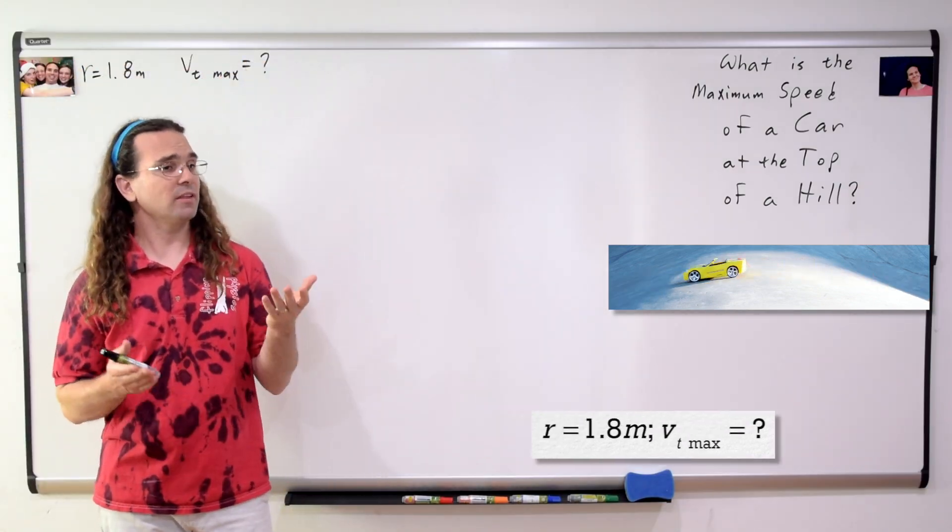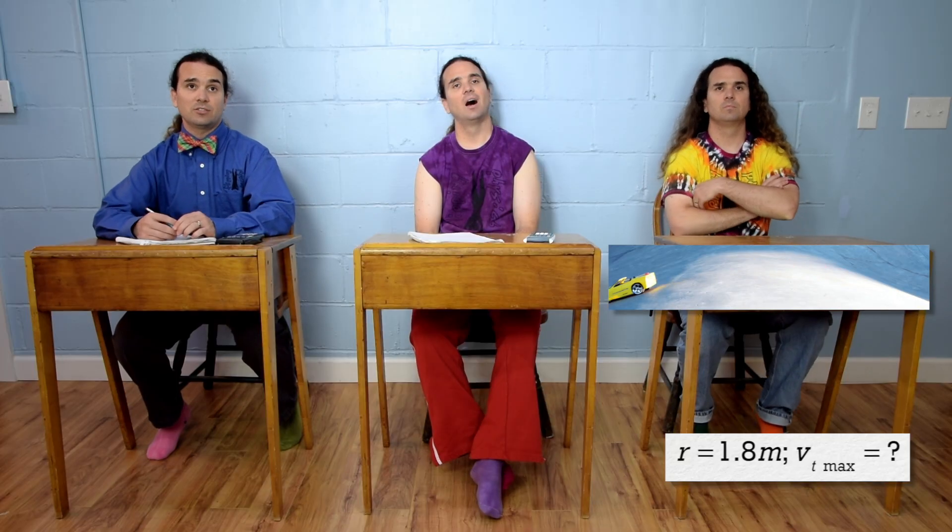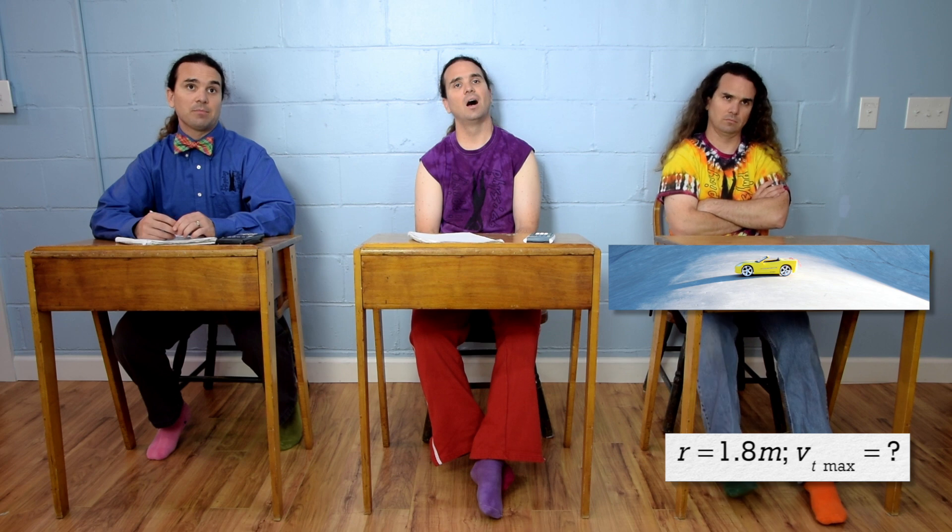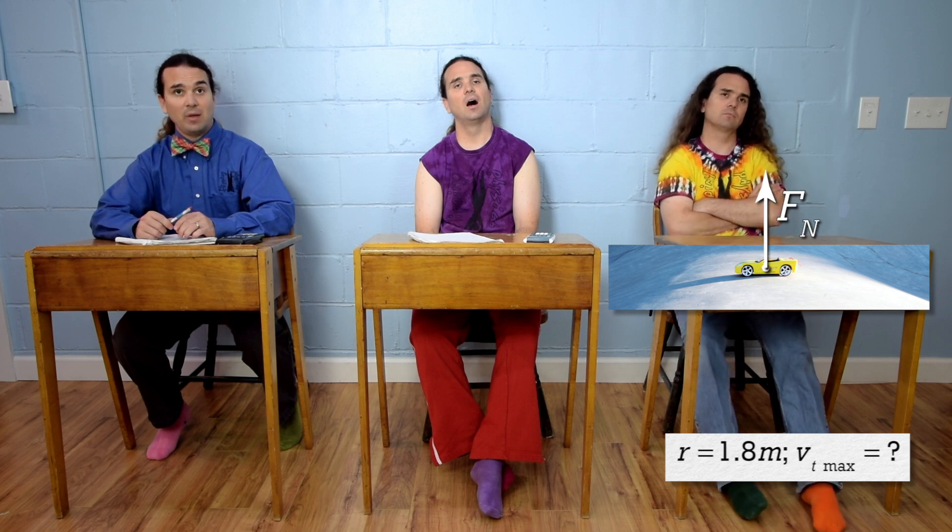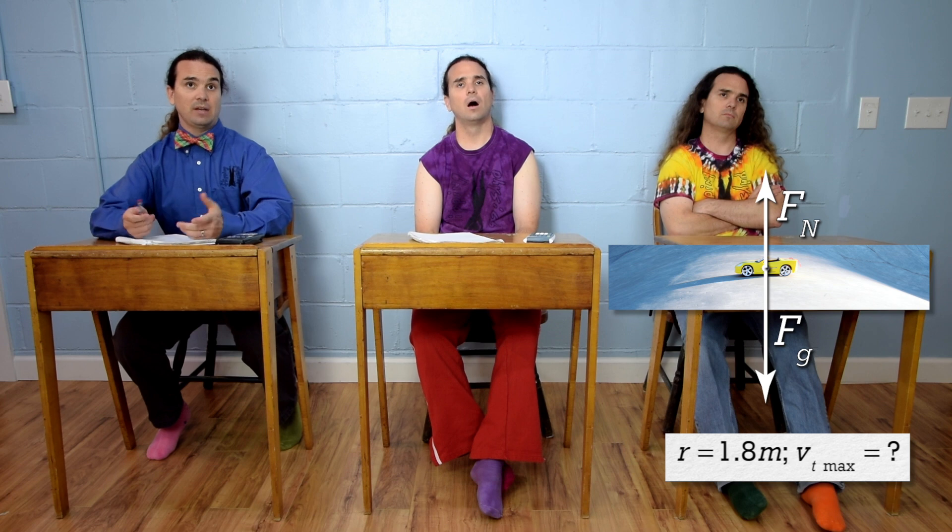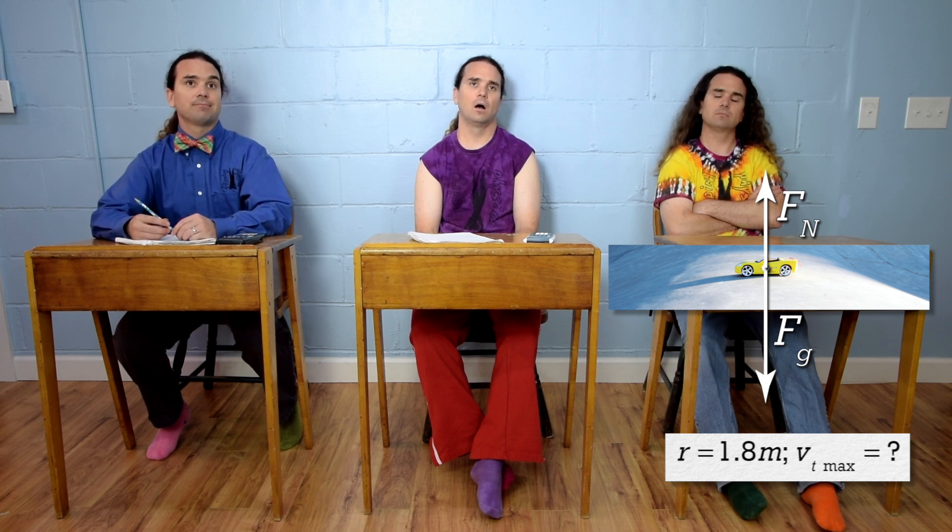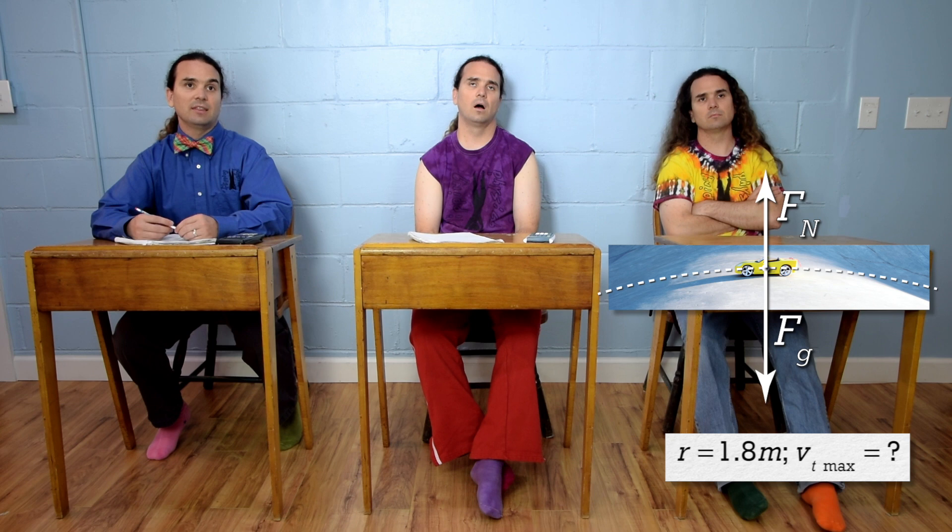Billy, please begin solving the problem. Well, let's start with the free body diagram. The force normal is up and the force of gravity is down. Now, we can sum the forces. In what direction do we sum the forces in? Because the car is moving in a circle, we can sum the forces in the in direction.